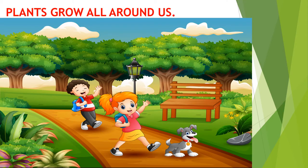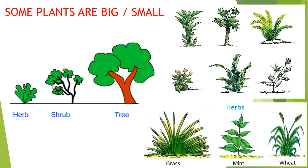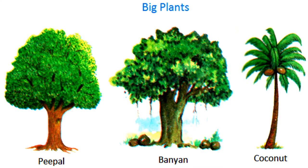Plants grow all around us. They make the earth colorful. Some plants are big while others are small. Very big plants are called trees. They have a very small plant called trunk.